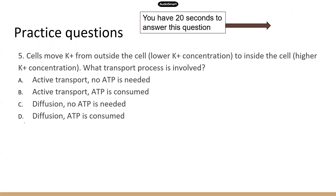This question is about potassium ion movement. Cells maintain a lower potassium ion concentration outside the cell and a higher concentration inside. Potassium ions move from lower to higher concentration — that's active transport, moving against the concentration gradient from low to high. In this process, energy is needed, and that energy is provided by ATP — the energy currency of the cell. When the cell needs energy, it breaks down ATP to release it. So the correct answer is B.